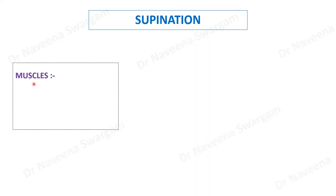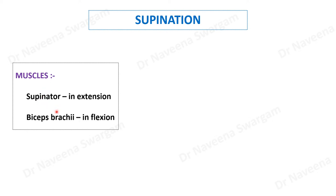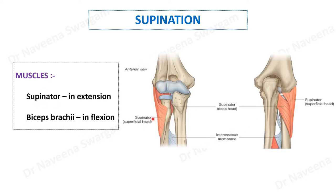The muscles producing the supination movement are the supinator and biceps brachii. The supinator is a muscle of the extensor compartment of the forearm. It arises in the form of two heads: a superficial head and a deep head. The superficial head arises from the common extensor origin at the lateral epicondyle of the humerus, whereas the deep head arises from the supinator crest of the ulna.